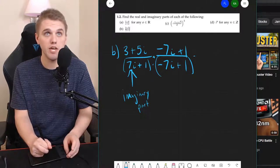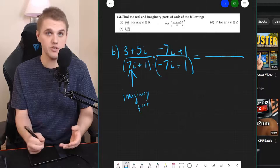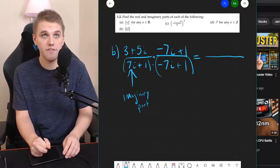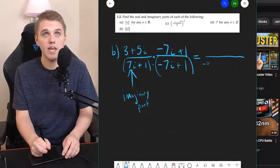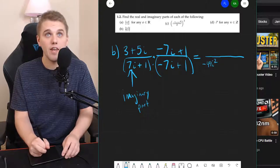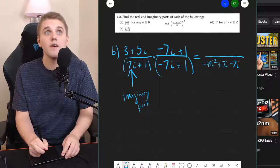And so let's do this multiplication. I'm going to start with the denominator because it's a little bit easier to work with. So 7i times negative 7i is negative 49i squared. And then plus 7i minus 7i plus 1.